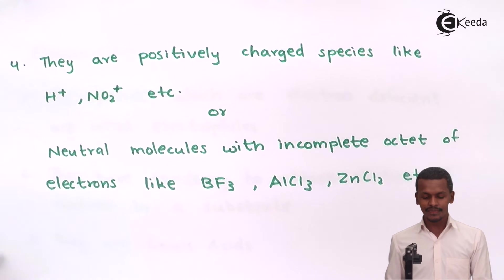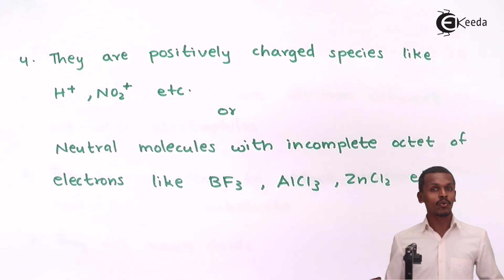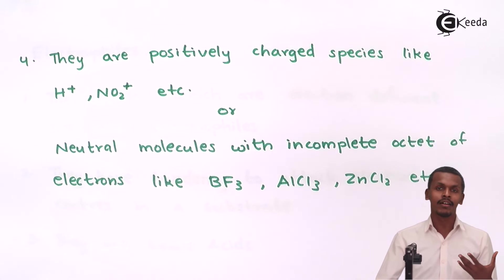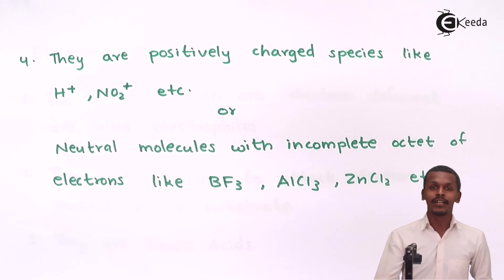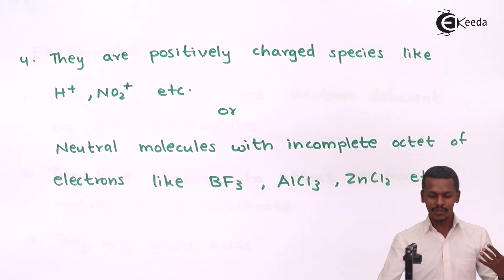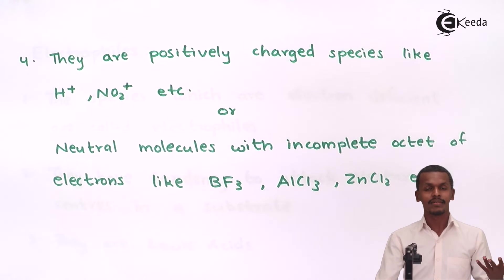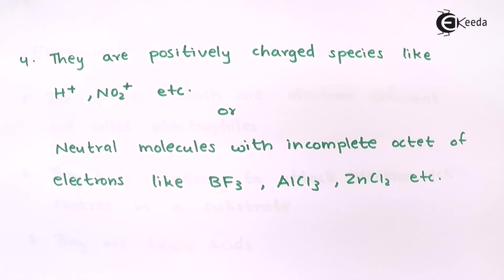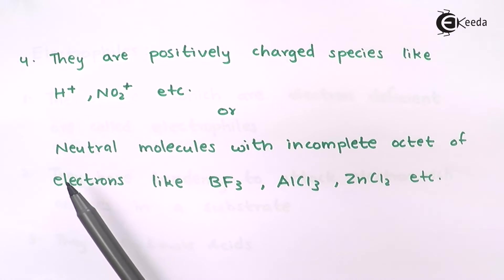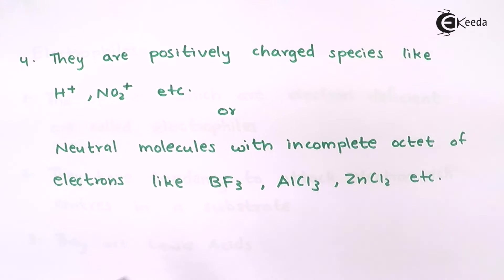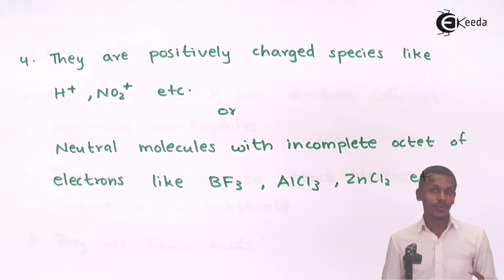Electrophiles are positively charged species like H⁺ and NO₂⁺. Being positively charged, they attract lone pairs of electrons and are therefore called Lewis acids. However, it is not necessary that an electrophile always be positively charged — there are also neutral molecules with an incomplete octet of electrons, such as BF₃, AlCl₃, and ZnCl₂, which also act as electrophilic reagents.